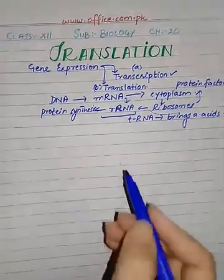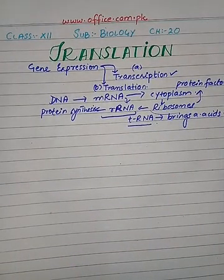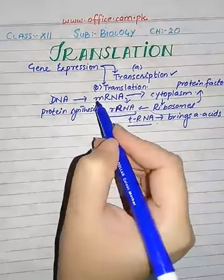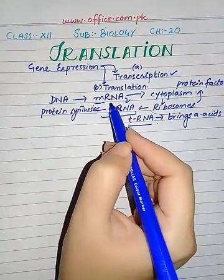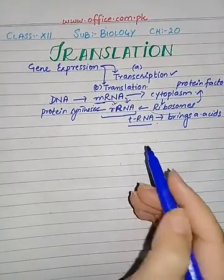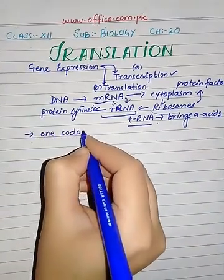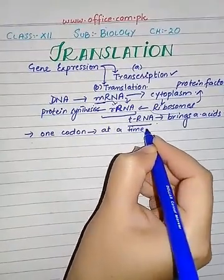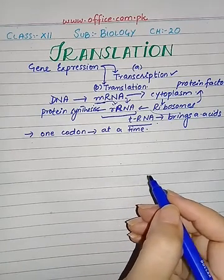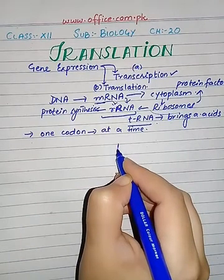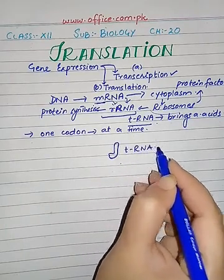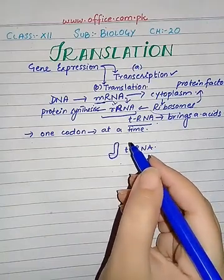First I will tell you the details theoretically, then we will see it in the form of a diagram. In prokaryotes, the process of translation begins when the initial portion of messenger RNA binds to ribosomal RNA. The messenger RNA lies on the ribosome in such a way that at one time only one codon is exposed at the polypeptide synthesis side. A transfer RNA molecule — which is shaped like the letter 'J' — possesses the complementary 3-nucleotide sequence for the sequence on messenger RNA.